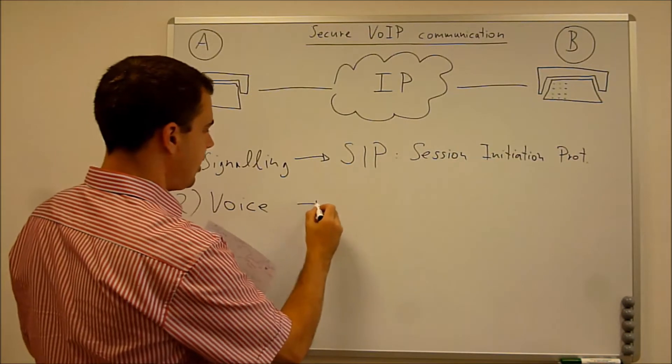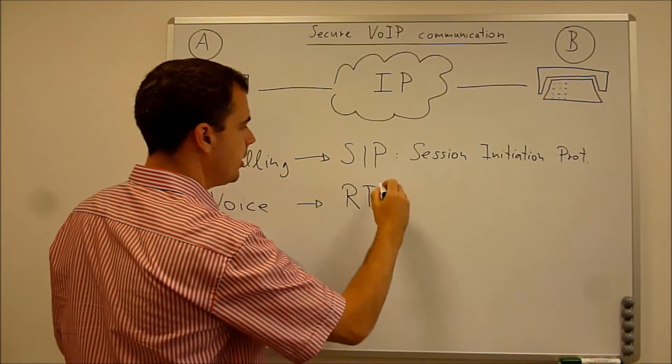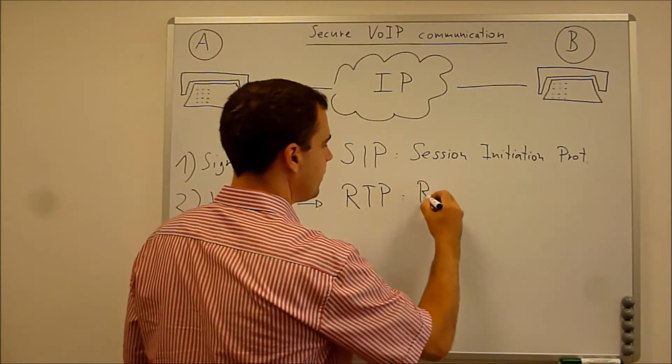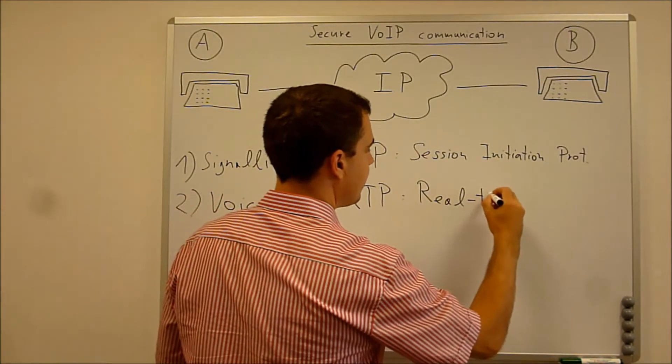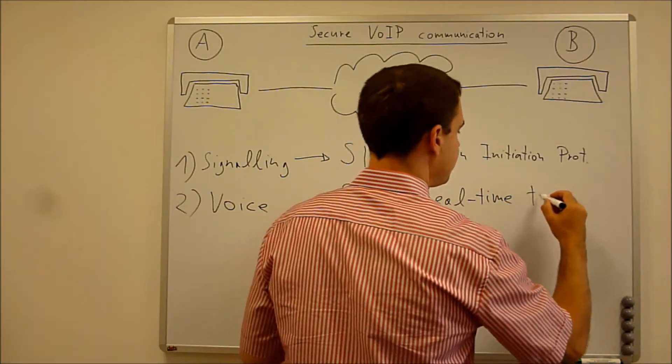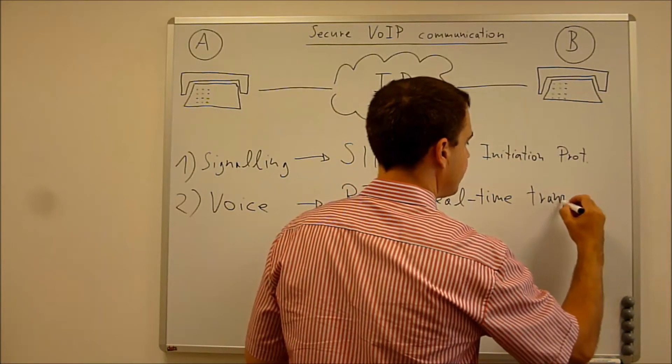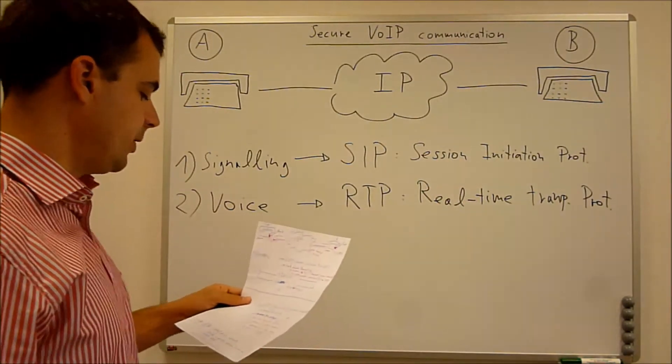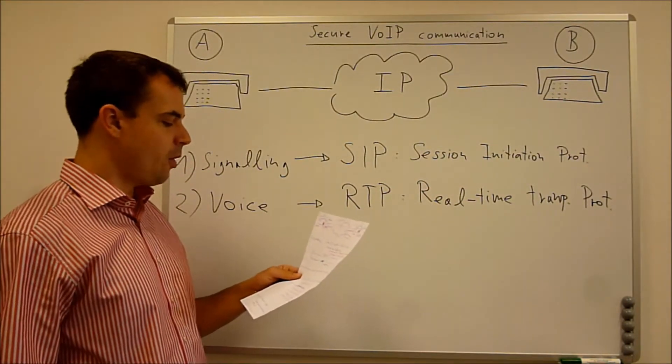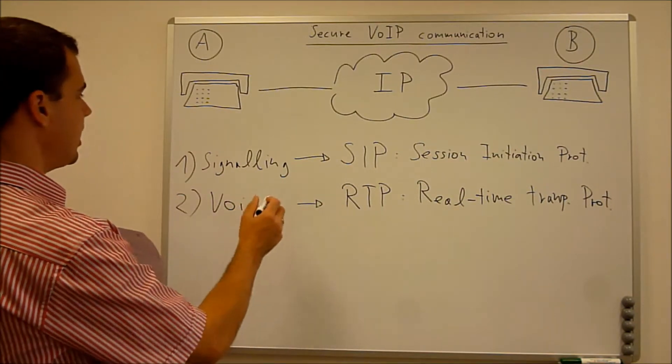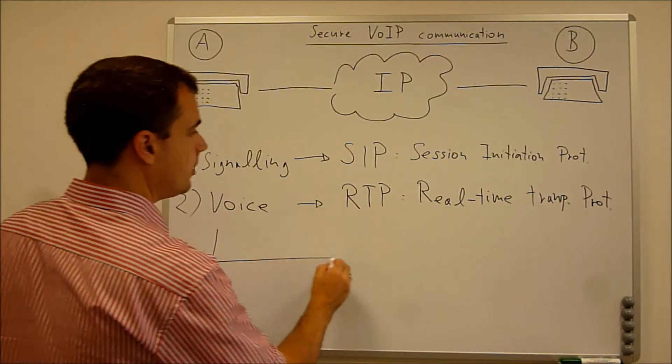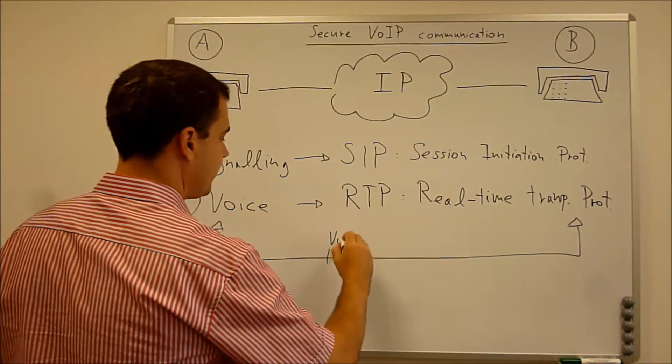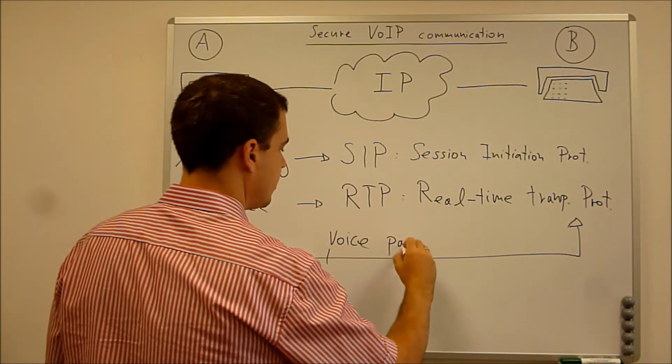And this is done with a so-called RTP. And that is Real-Time Transport Protocol. All right, so this is used for streaming the voice. So they are sending voice packages from A to B in both directions. They are sending voice packages.